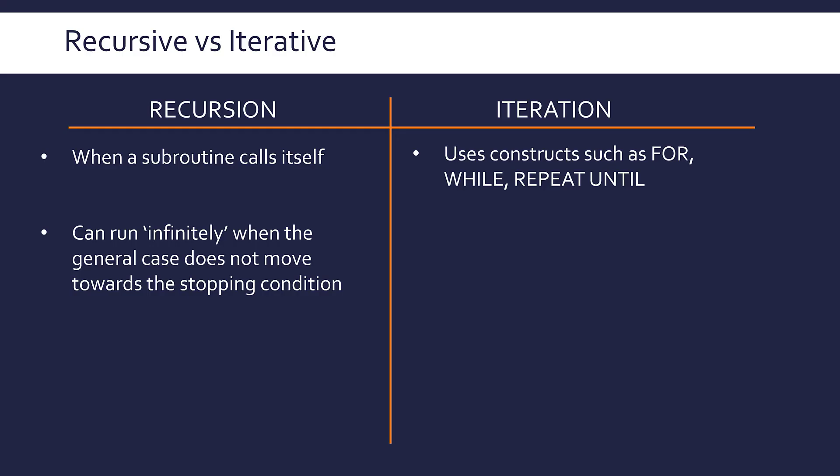You have to have a situation where every call of itself moves you closer towards that base case, which will stop the recursion. So it will appear infinite if you haven't got a well-defined base case. But in reality it's going to crash — it's going to run out of space. You'll have a stack overflow where it just hasn't got memory to deal with all of these pending subroutine calls.